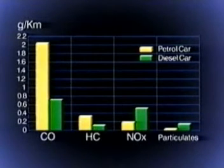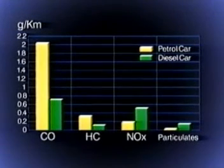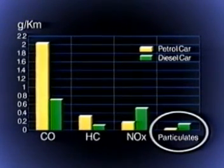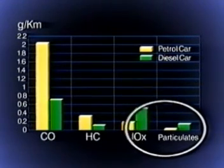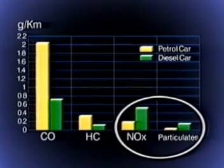Diesel exhausts actually emit less carbon dioxide, carbon monoxide and hydrocarbon emissions than a catalyst-equipped petrol engine. It's the particulates, tiny particles of soot which produce black exhaust smoke, and the NOx emissions from a diesel engine which are greater.